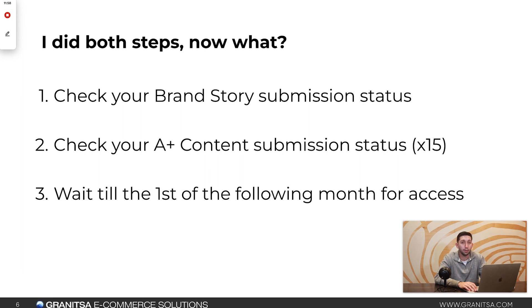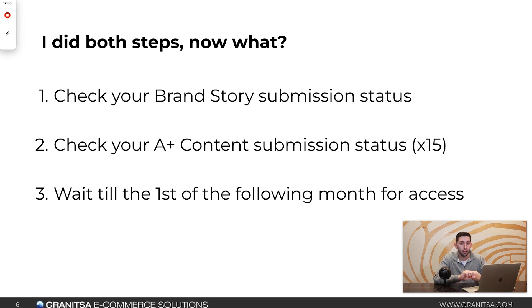Once you've done both steps, make sure your brand story got approved and is applied to all ASINs. Check your A-plus content submission status — make sure all 15 got approved on 15 different child ASINs. And if you've done both of those, step number three: you will have to wait till the first of the following month to get access.